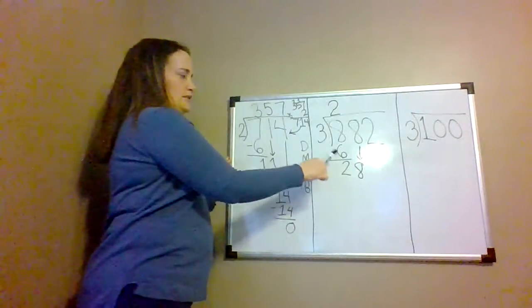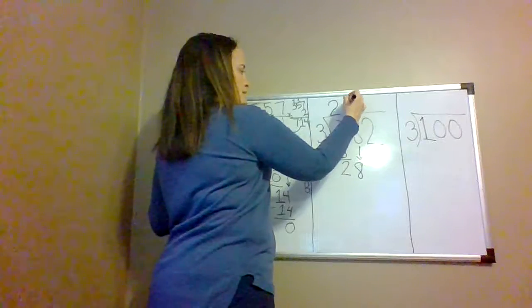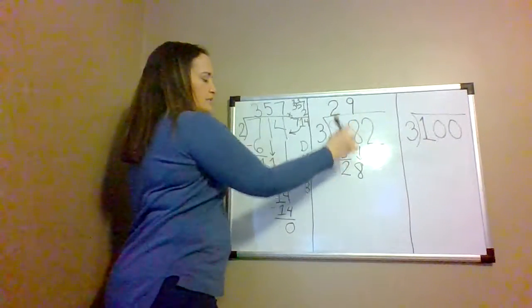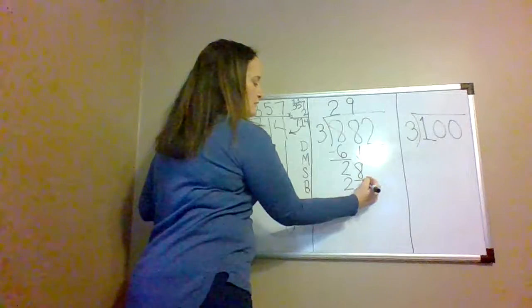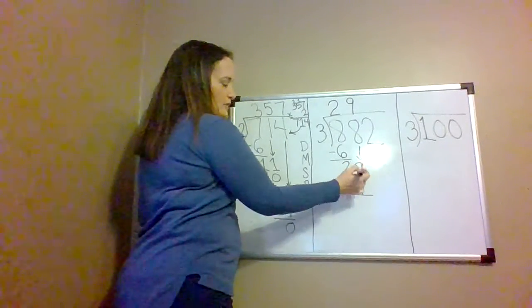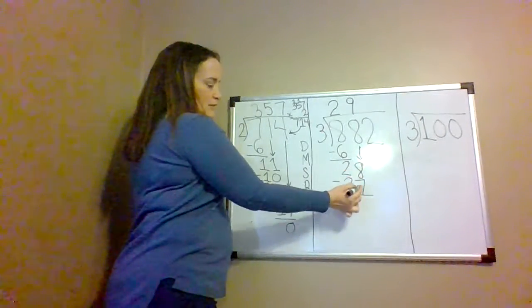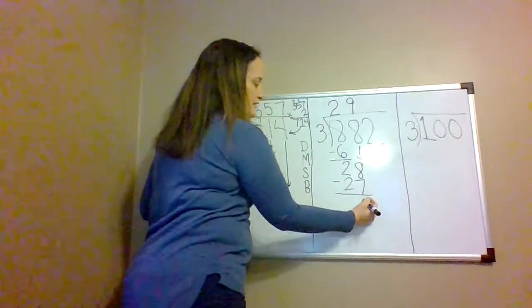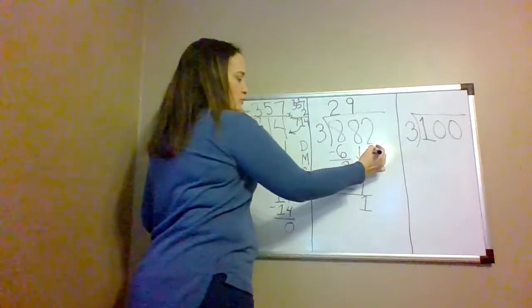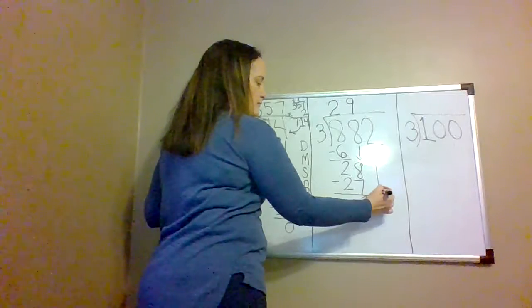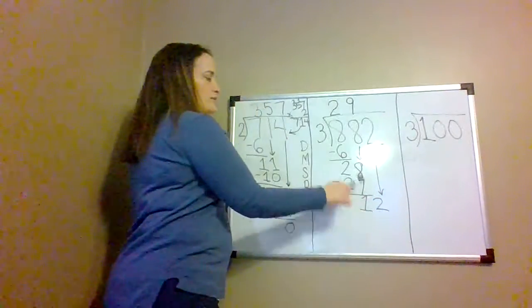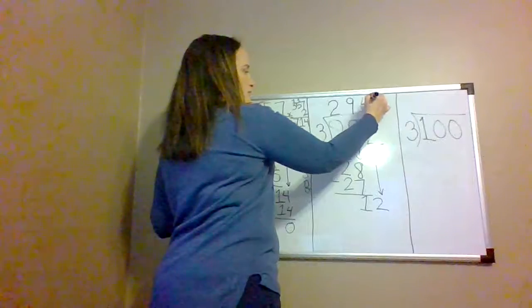28 divided by 3 is 9. 9 times 3 is 27. We subtract: 28 minus 27 equals 1. Then we bring down the 2. 12 divided by 3 equals 4.